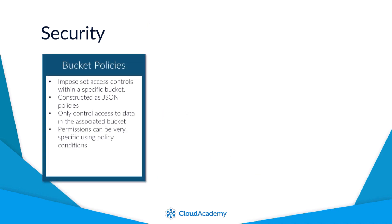Bucket permissions can be very detailed and specific — for example, allowing only access for a specific user within your account to access data within a specified time range and only when coming from a specific IP address. There is a huge amount of granularity that can be assigned within these bucket permissions.